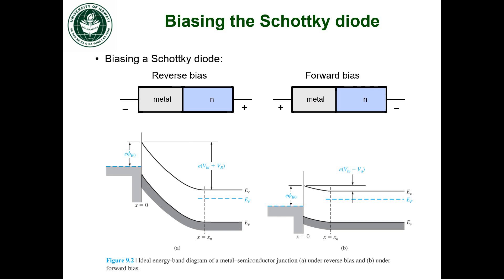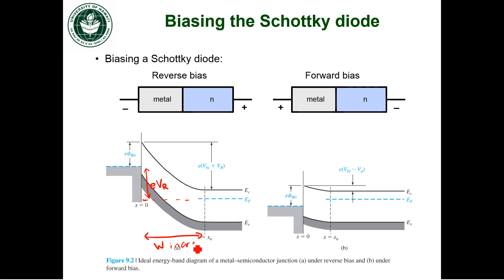These are what the energy band diagrams look like. You're doing the same kind of thing as a PN junction, just that now you have metal here. Here is our band diagram on the left for the reverse bias Schottky diode. We still offset the Fermi levels — here's the Fermi level in the metal, and here's the Fermi level in the semiconductor. They're offset by an amount equal to that reverse bias voltage, just like the PN junction. You also notice here that the width of the depletion region is also increasing.